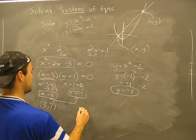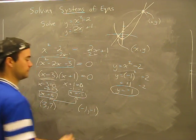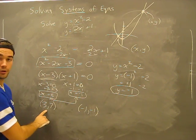So when x equals negative one, y also equals negative one. Okay, there is our two points.